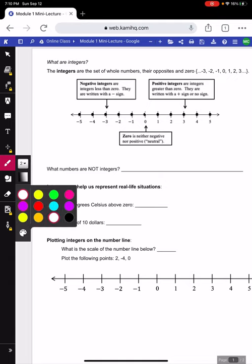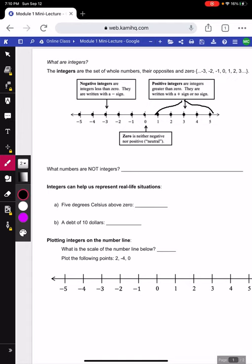The integers are the set of whole numbers, their opposites, and zero. Our whole numbers, we have our positive integers on our right side of the number line. So 1, 2, 3, 4, 5, and so on.